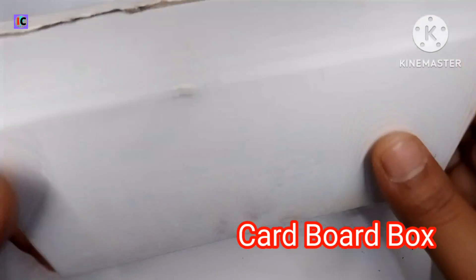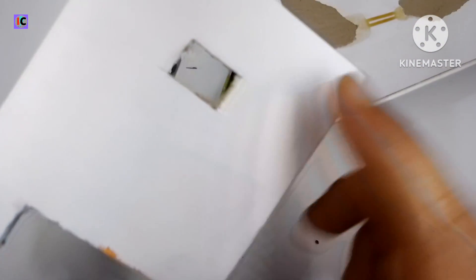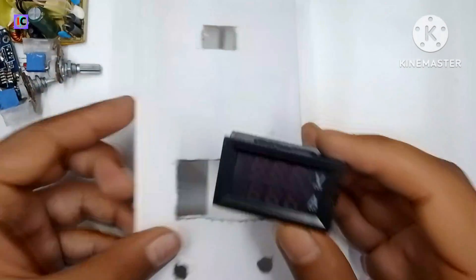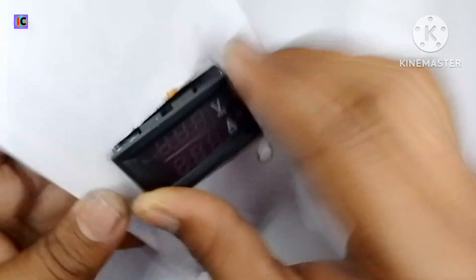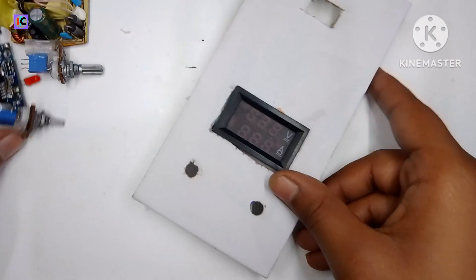So this is our casing box in which we are putting all the components. First we have to put the voltage and ampere meter on the top of this to watch the output current as well as the voltage.